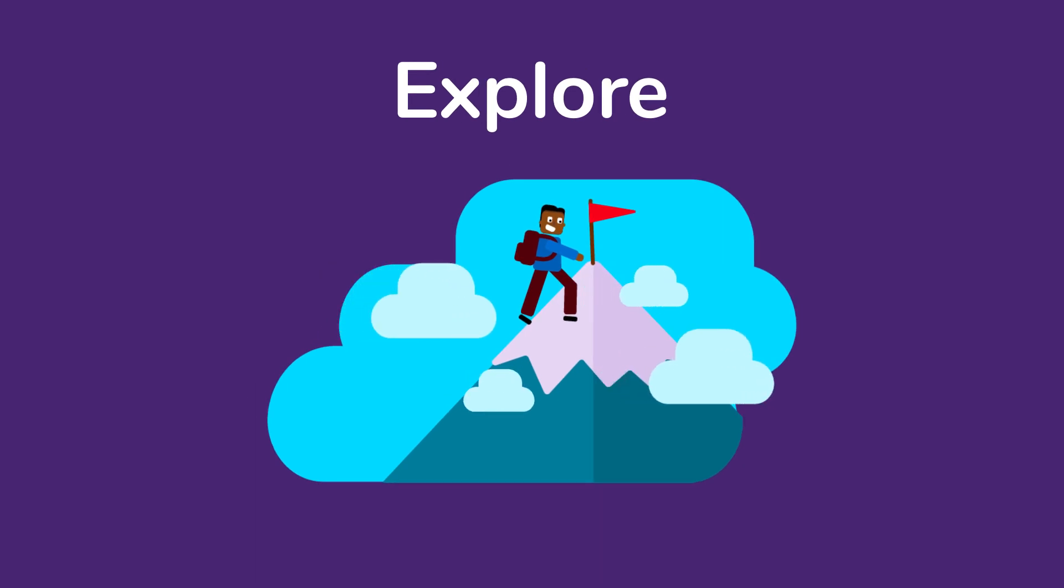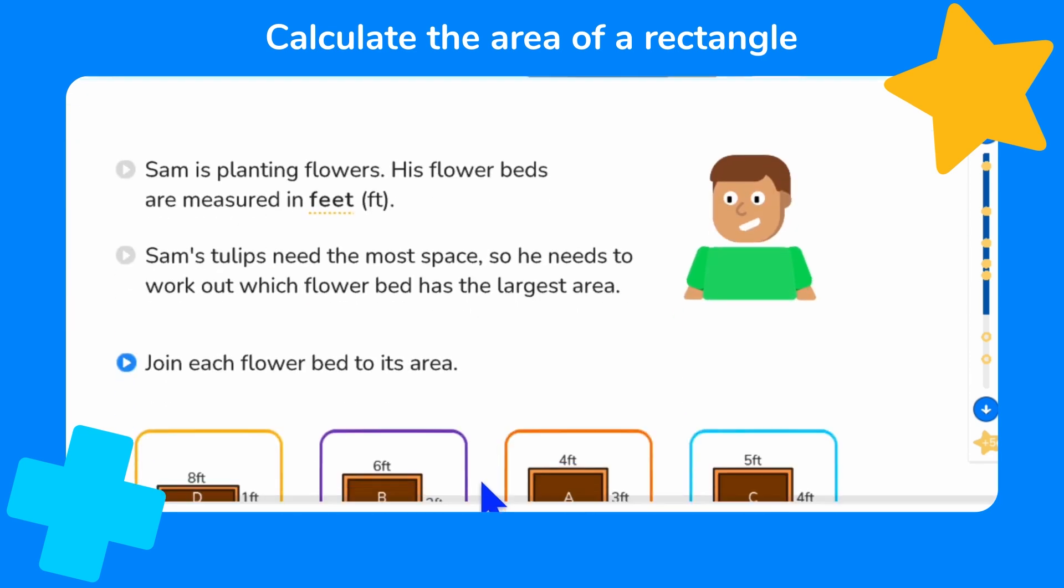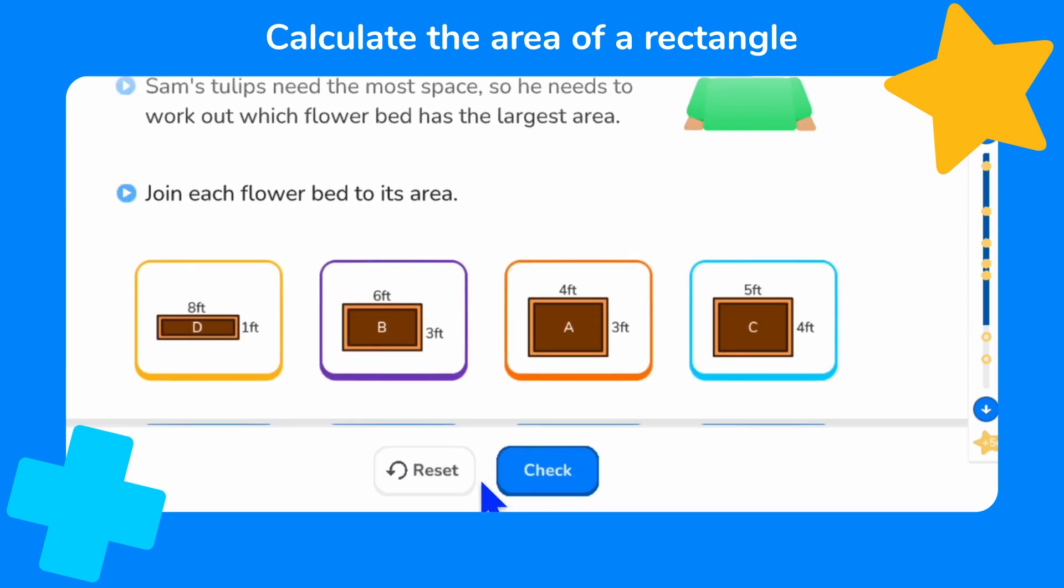Finally, let's explore this a bit more by applying what we've just learned to a real life situation. Sam is planting flowers. His flower beds are measured in feet. His tulips need the most space, so we need to help him work out which flower bed has the largest area. First, we need to join each flower bed to its area. Can you remember how to calculate area?